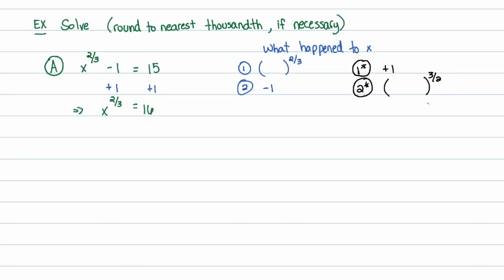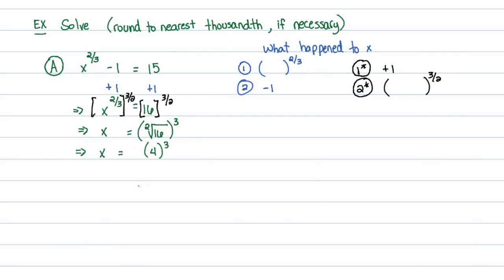My next step is to raise both sides to the 3/2 power. On the left-hand side, x to the 2/3 raised to the 3/2 — powers to powers multiply, so the 3s cancel and the 2s cancel — this becomes x to the 1st. On the right-hand side, that's 16 to the 3/2 power, or the square root of 16 being raised to the 3rd power. The square root of 16 is 4, and 4 to the 3rd is 64.